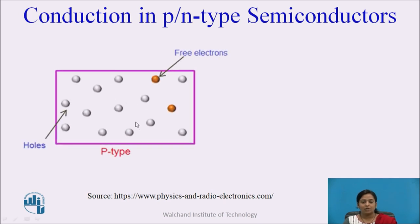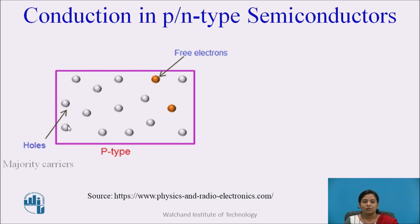The P-type semiconductor material is made up by adding a trivalent impurity into pure semiconductor. The addition of this trivalent impurity provides free holes, so current conduction in P-type semiconductor takes place due to holes. So holes are the majority charge carriers and electrons are the minority charge carriers.